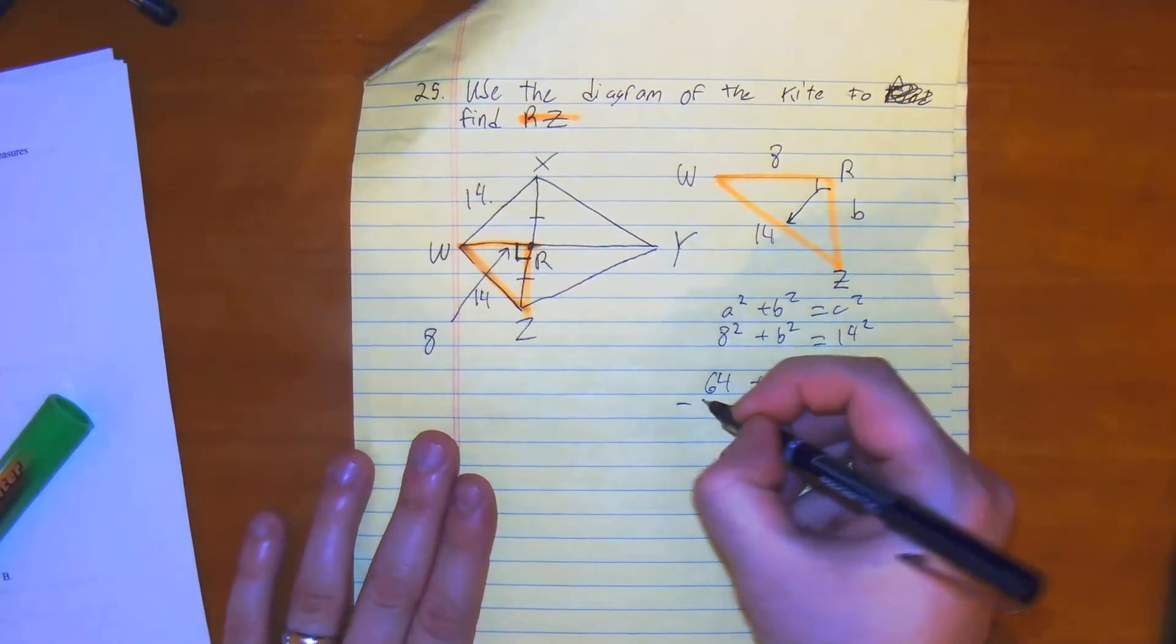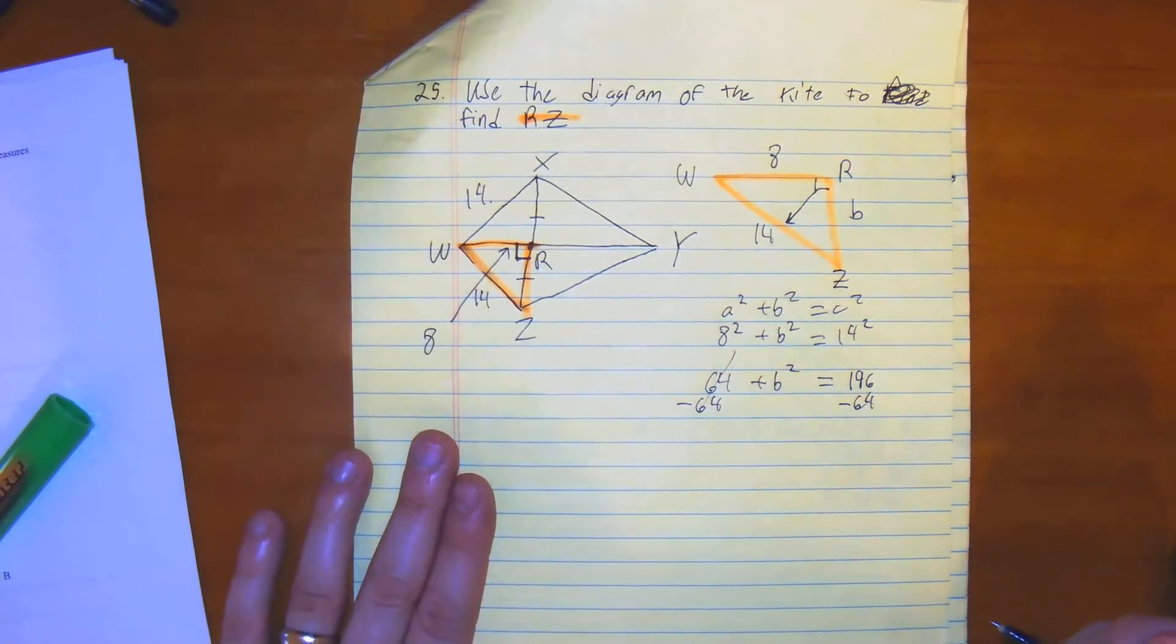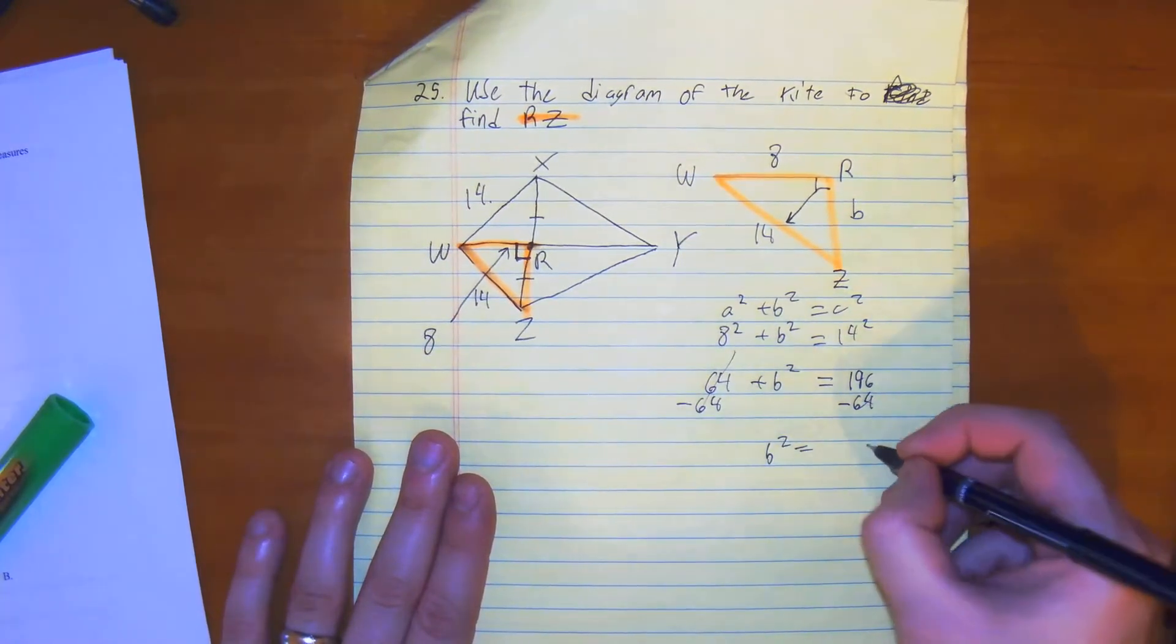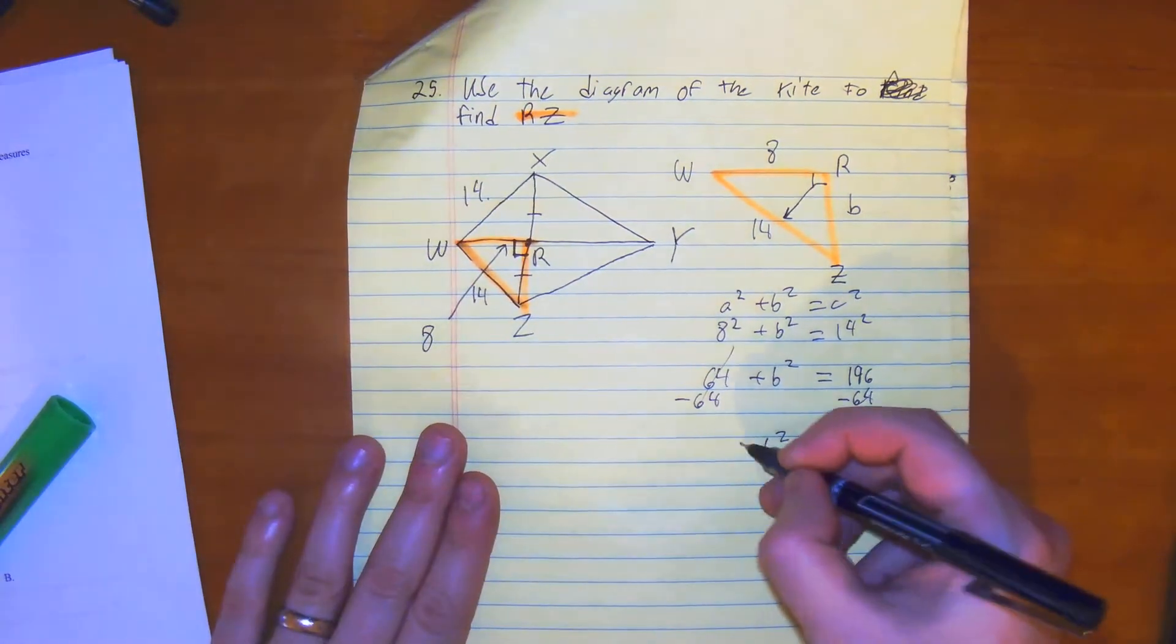We subtract 64. Subtract 64. 196 would be equal to B squared to 132, I believe. It is 132.